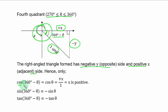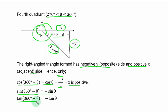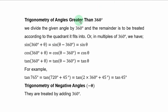The right-angled triangle formed has a negative y opposite side and a positive x adjacent side. Hence: cos(360 degrees minus theta) is equal to cos theta, that is adjacent over hypotenuse giving a positive result. sin(360 degrees minus theta) is equal to negative sin theta, and tan(360 degrees minus theta) is equal to negative tan theta.